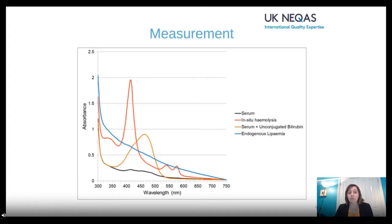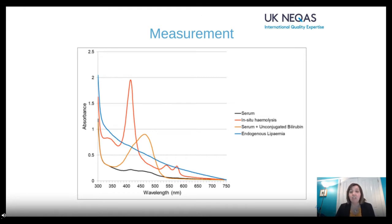For reference, the absorbance spectra for hemolysis, icterus and lipemia are shown here. This illustrates the wavelengths used, and any spectrophotometric assay would be affected if it is measuring at wavelengths which overlap the absorbance maxima for hemoglobin, bilirubin, or lipemia.